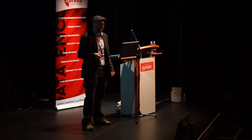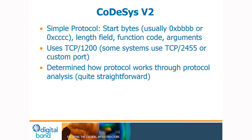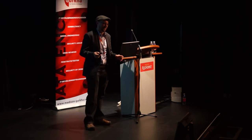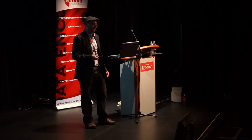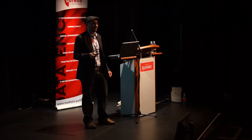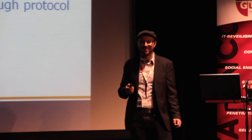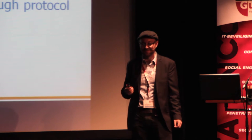For the version 2 protocol, you can download scripts from the Digital Bond website. It has two start bytes — BB BB or CC CC — then a length field. The length field is endian-dependent: little-endian for little-endian controllers, big-endian for big-endian controllers, and you have to tell the PC software which endianness your PLC is. After the length field there's a function code, then arguments. Version 2 usually uses TCP port 1200 or 2455, though some vendors use a custom port. Figuring out how the protocol worked was pretty easy — just analyzing PCAPs and looking for unique packets that correspond to particular commands.